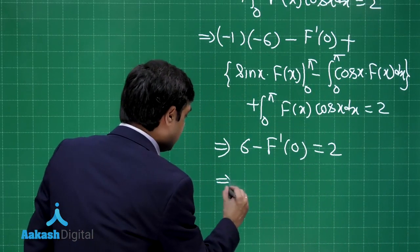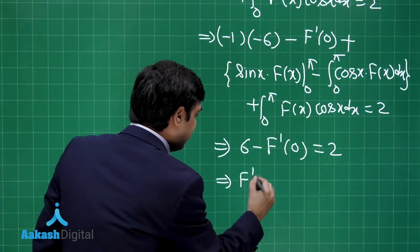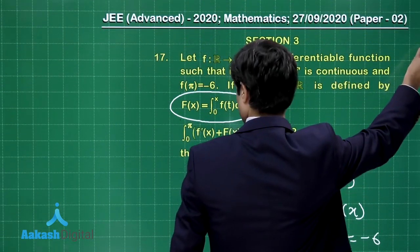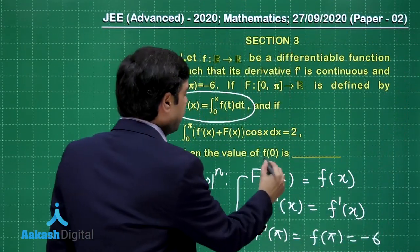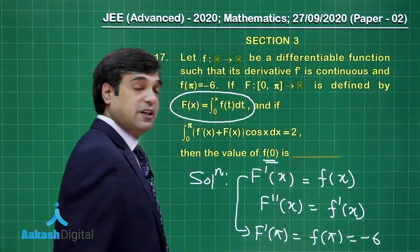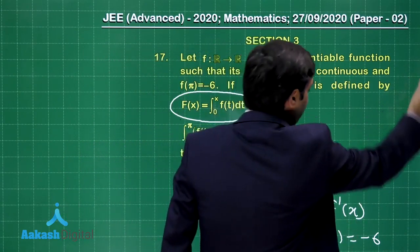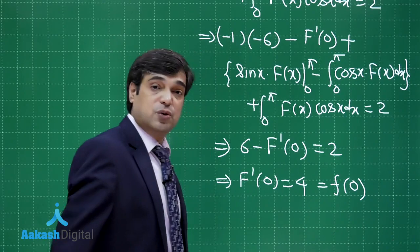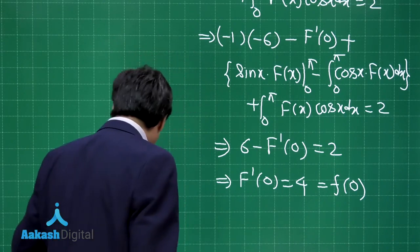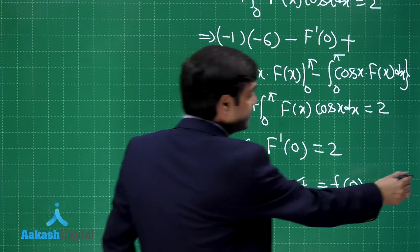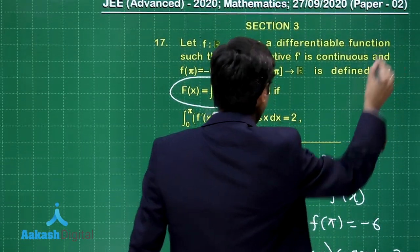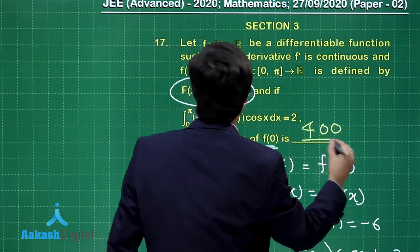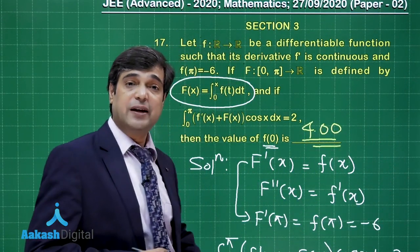So f'(0) = 4. The question asks for f(0). Since F'(x) = f(x) and F''(x) = f'(x), we have f'(0) = f(0), so f(0) = 4. The result is 4.00. This question is clear.